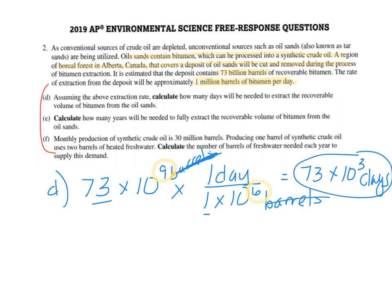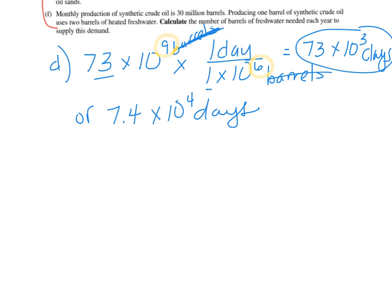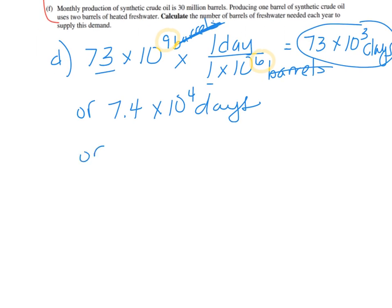Now, this is a correct answer. If you change it to proper scientific notation, it would be 7.3 times 10 to the fourth days. Or you could even take it all the way out of scientific notation if you want to. And you could do—sorry, I have a mistake here. It's 7.3 days like that. Or it's 73,000 days.